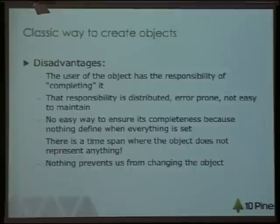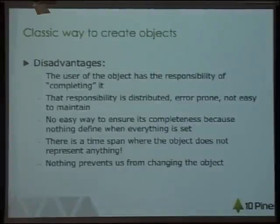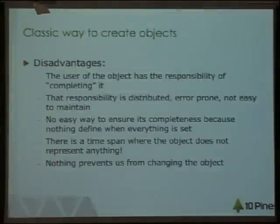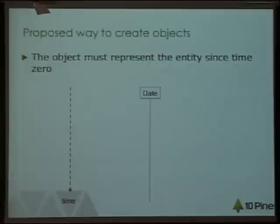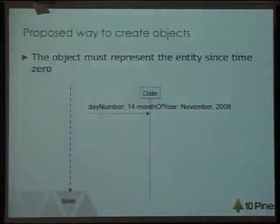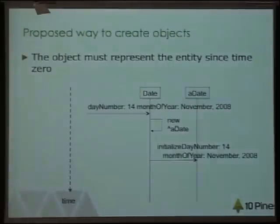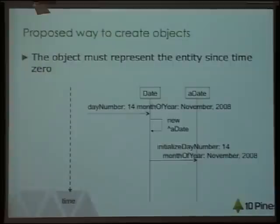There is a time span where that object is invalid, and programmers have to think: can I send this message now? Is it valid to send the message now or not? What I propose is to create complete objects from the beginning. Instead of sending new and then setters, just create the complete object — with all its instance variables, all its collaborators — from the beginning.